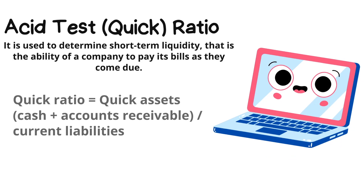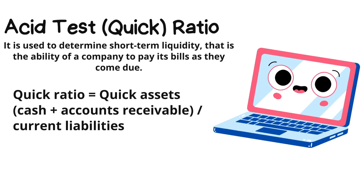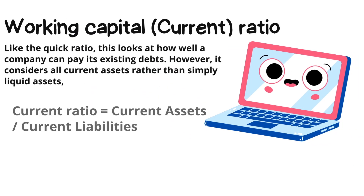One more ratio is the acid-test ratio, also known as the quick ratio, which basically indicates whether the company has sufficient short-term assets to cover its immediate liabilities. This ratio gives information about the financial condition of the company. Quick ratio is calculated by dividing the quick assets — which includes cash and accounts receivable — by current liabilities.